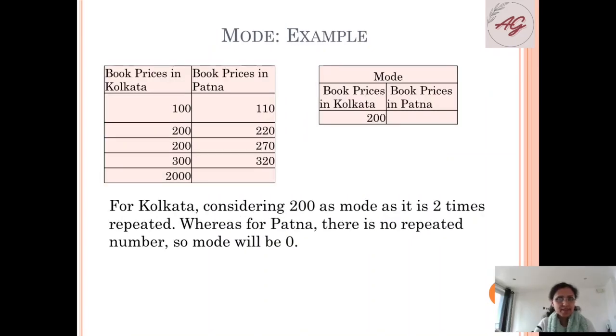Let us understand with an example what is mode. If we consider the same data set, we can find out we have 200 appearing two times, so mode is 200. But if we consider Patna's database we can find out there is no repeated number, so here mode will be zero.